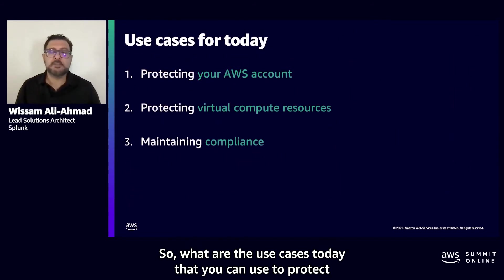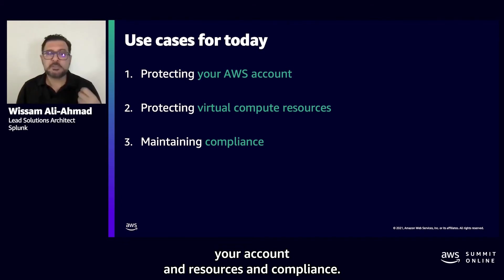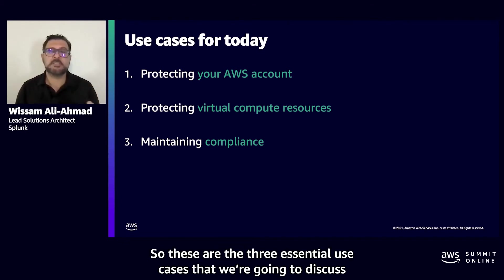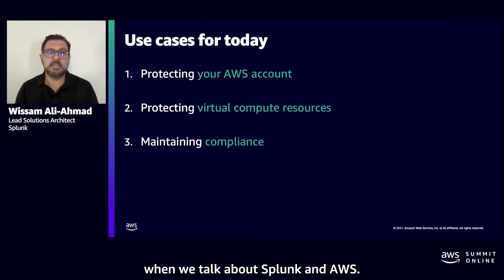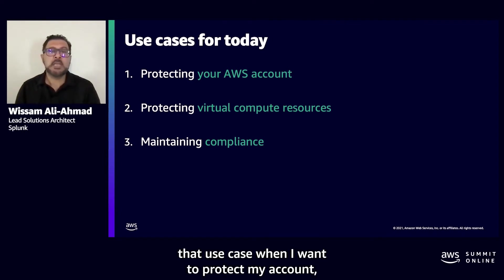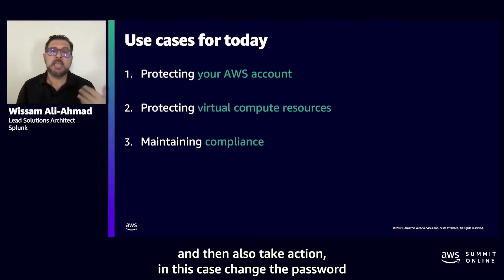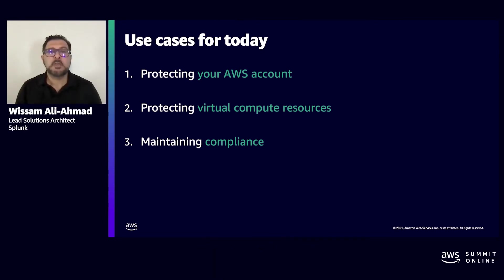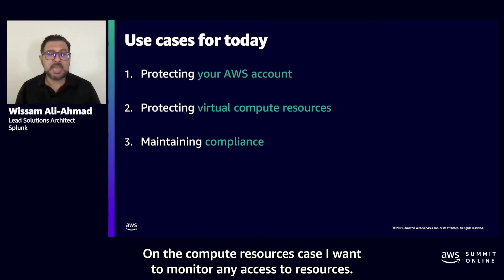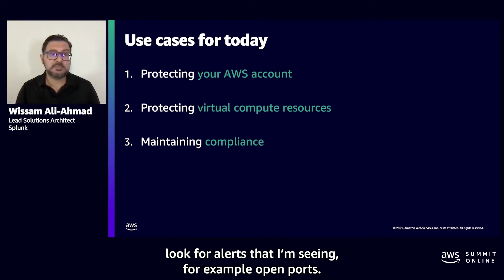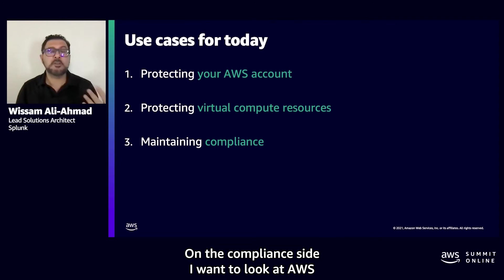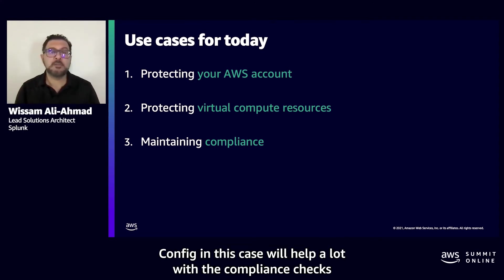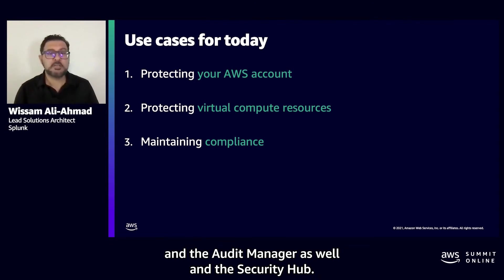These are the three essential use cases we'll discuss together with Splunk and AWS. For detecting AWS account issues, I want to see if my account has been compromised, detect any potential unauthorized IAM users, and take action — for example, change the password for all IAM users. For compute resources, I want to monitor any access to resources, scan for vulnerabilities, look for alerts like open ports. On the compliance side, AWS Config will help a lot with compliance checks, along with Audit Manager and Security Hub.